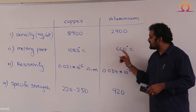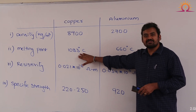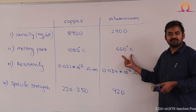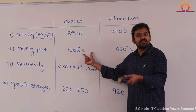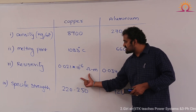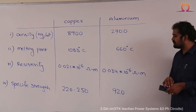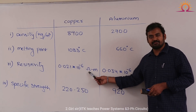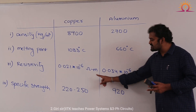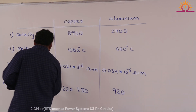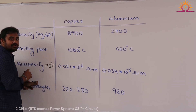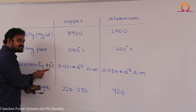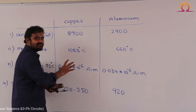However, if you look at the melting point, copper has a higher temperature withstanding capacity — 1083 degrees centigrade — whereas aluminum's melting point is 660 degrees centigrade only. Therefore, copper can withstand higher temperatures, which is a superior quality. Coming to the resistivity point of view, copper resistivity is 0.021 × 10⁻⁶ ohm-meters. These resistivity values are valid at a temperature of 75 degrees centigrade, not at room temperature, because when a machine is under full load condition, the average temperature inside the machine will usually be 75 degrees centigrade.